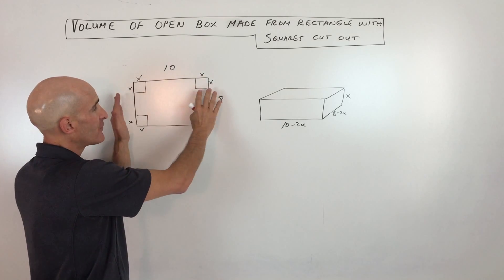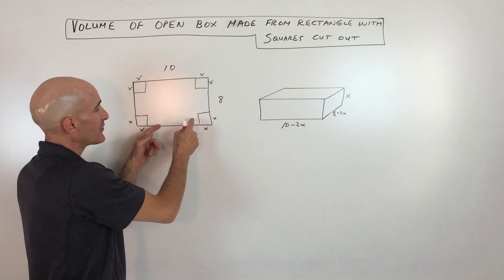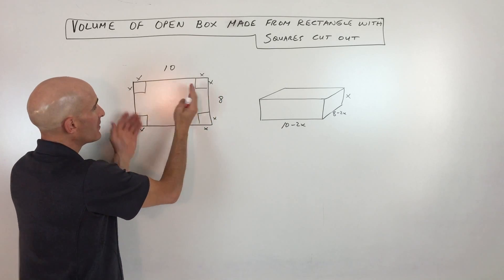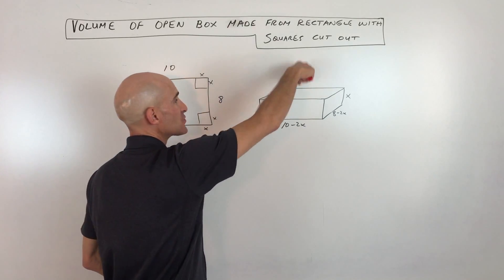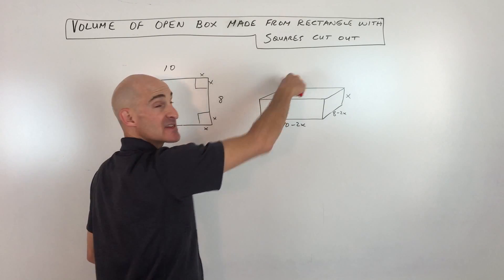So what happens is you start with a flat piece like this, you cut out these corners and then you fold up the sides so that the box is open from the top like that.